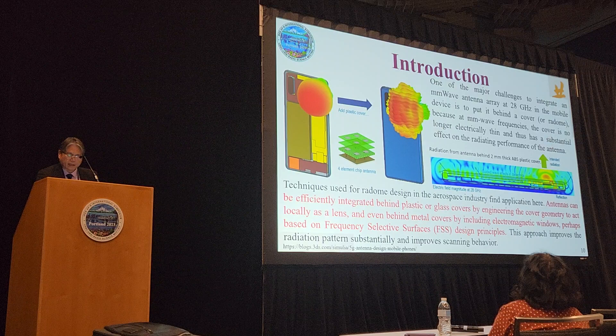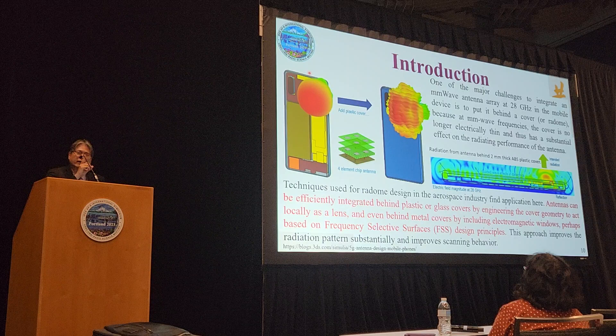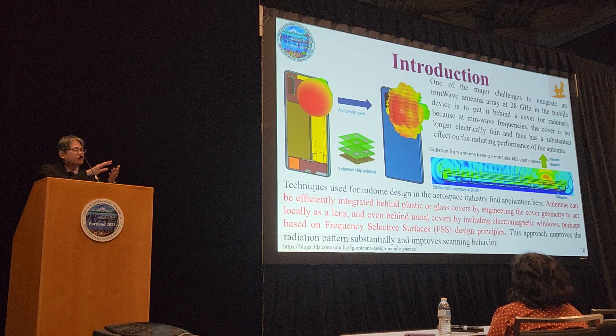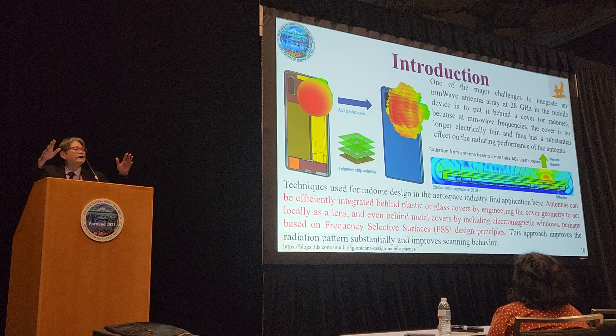Because of that, the simulation on the left without the cover shows a clean pattern. But on the right, when you try to put the plastic cover on top of the 2x2 array, you can see there is some kind of ripple effect that actually destroys the whole thing.